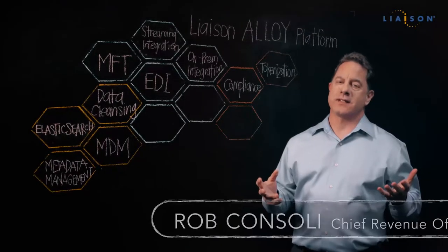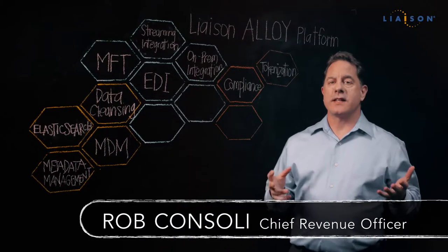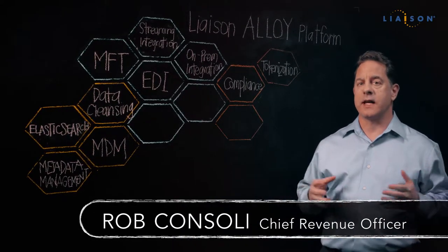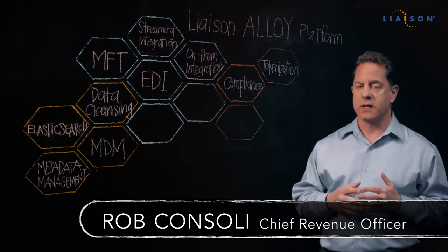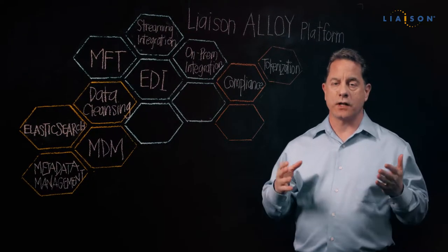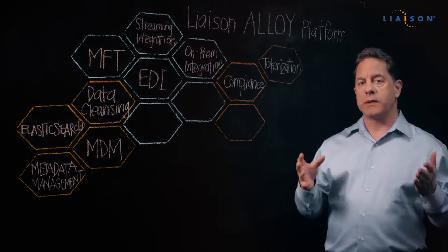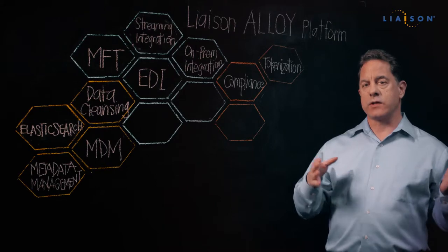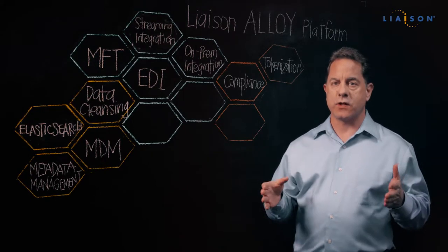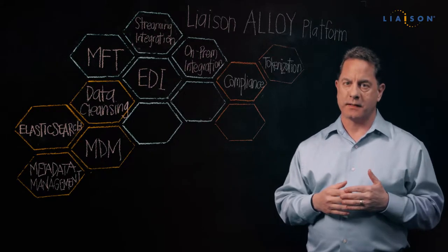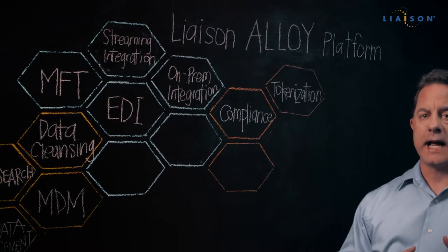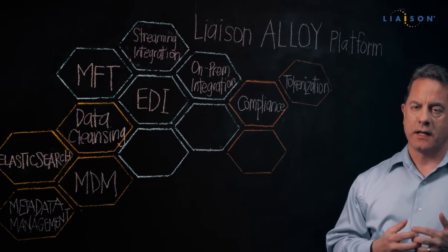So what is tokenization? Tokenization is a critical component of today's data architectures. In fact, it's much more secure than encryption. Tokenization replaces your data with a surrogate value to keep it secure in your environment. It's actually a part of the Liaison Alloy platform architecture.